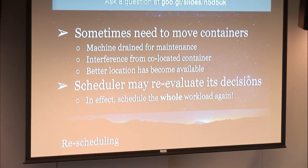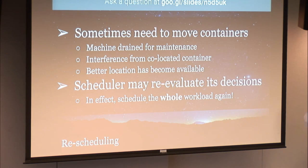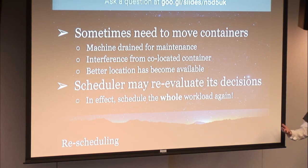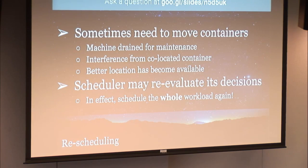A more general case of the preemption idea is rescheduling — sometimes you want to revisit your decisions and move a container from one machine to another. For example, if you drain a machine for maintenance, you'll need to move the container. If you suffer strong interference from a co-located container, moving it elsewhere might improve performance and SLO satisfaction. Or a better location may have become available — access to a GPU or locally available input data. This means the scheduler has to re-evaluate the entire workload, not just new containers.